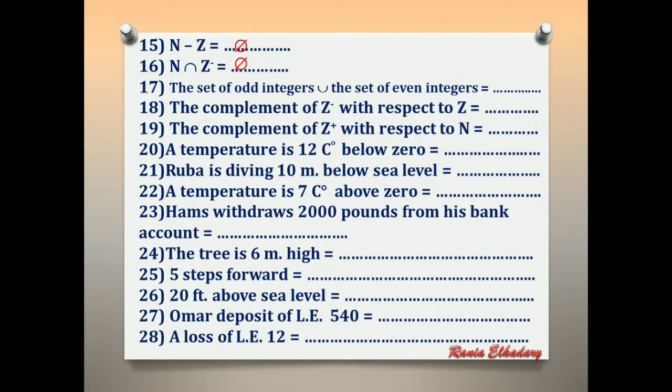Number 17: the set of odd integers union the set of even integers. We have odd and even. Adding odd and even gives us Z.